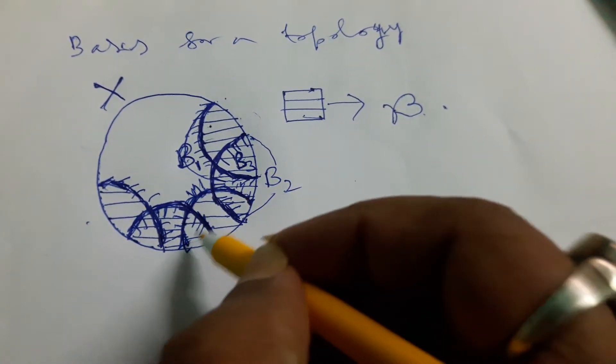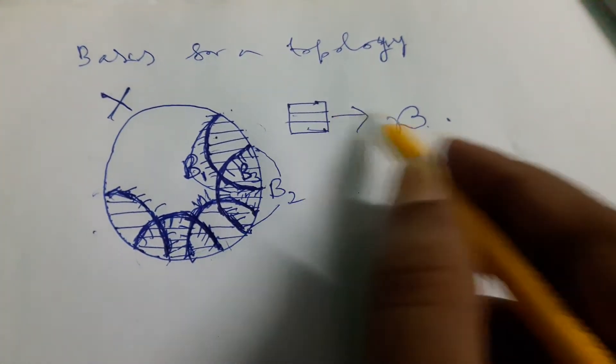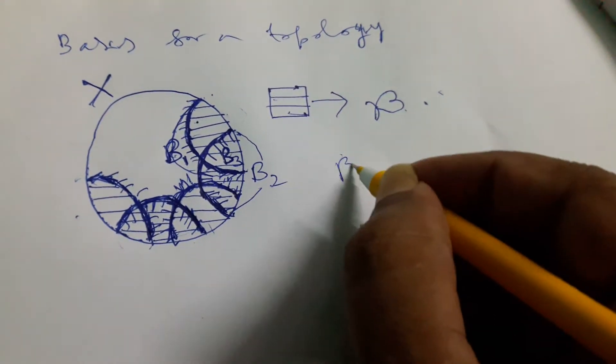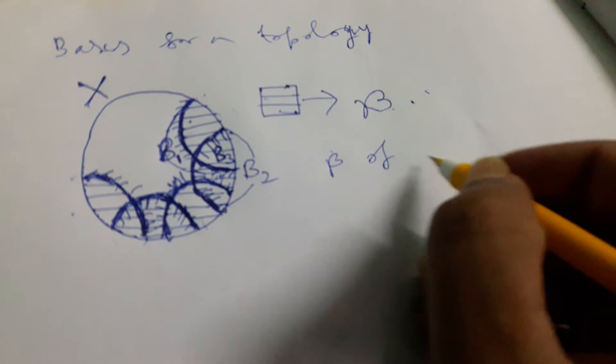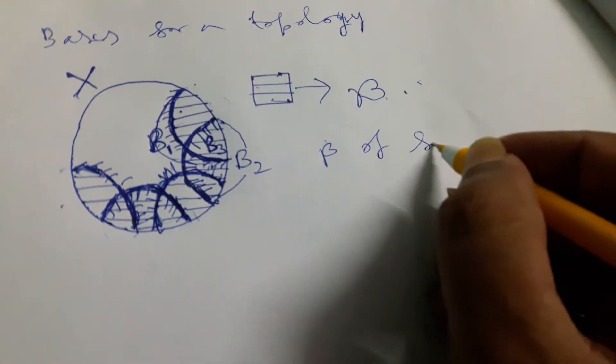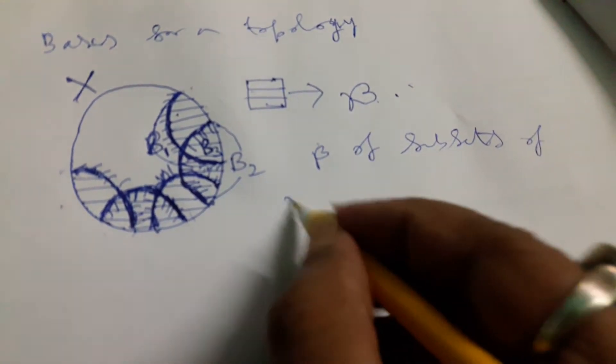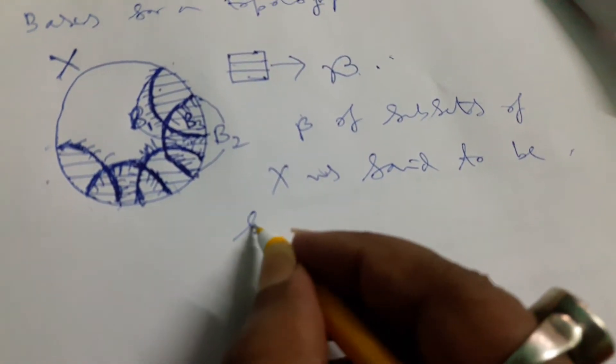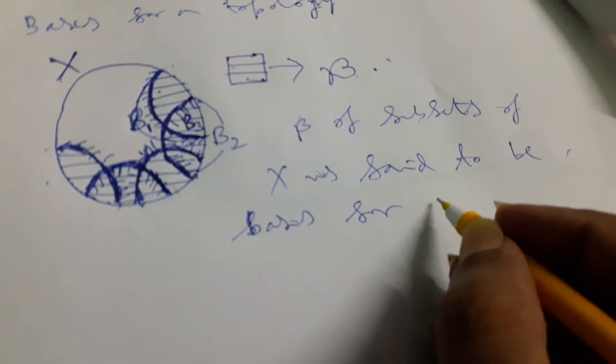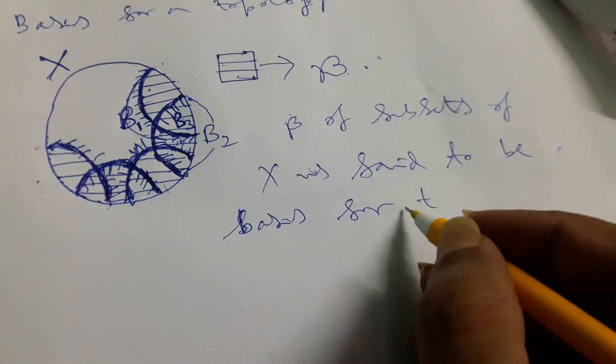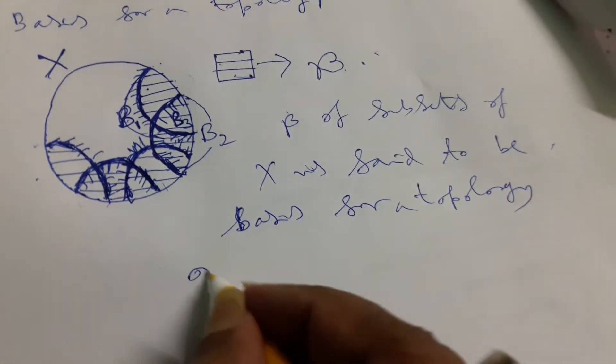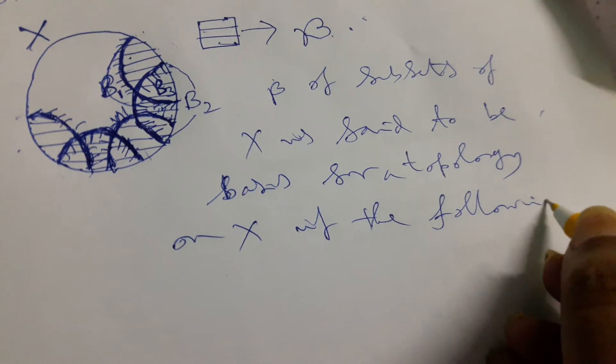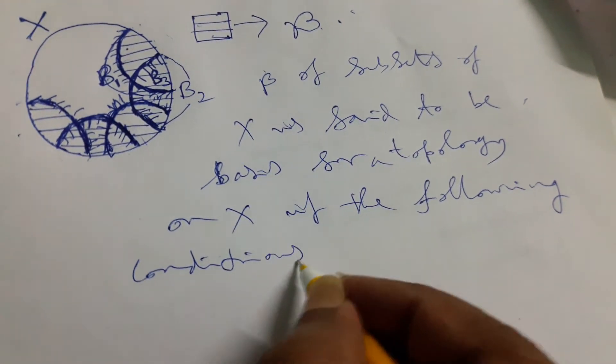This is a collection of subsets. The collection cursive B of subsets of X is said to be basis for a topology on X if the following conditions are satisfied.